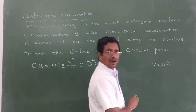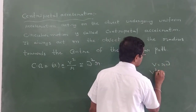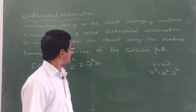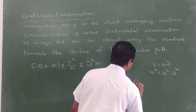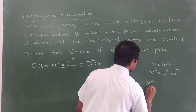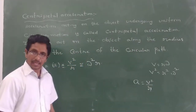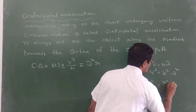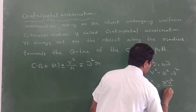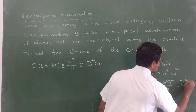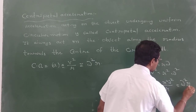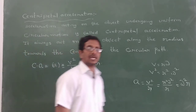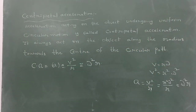Now we have V squared equal to R squared omega squared. Therefore, by simplification, A is equal to V squared by R. Substituting V squared: R squared omega squared by R, that is equal to omega squared R. Like that, this equation we can get. This is about centripetal acceleration.